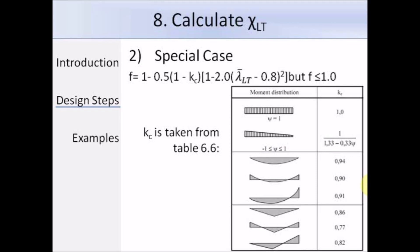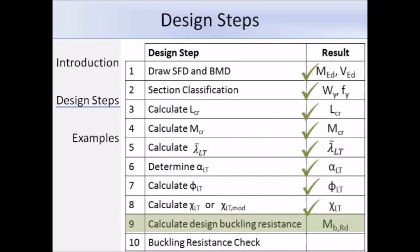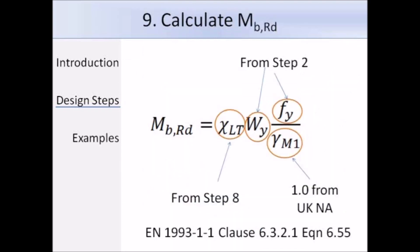Now that we've calculated chi LT or chi LT,mod, we can calculate the design buckling resistance moment. Expression 6.55 gives M_b,RD as chi LT or chi LT,mod times W_Y times F_Y divided by the partial factor gamma M1, which equals 1. We have all the values from the previous steps, so it is just a matter of substituting them in to get the design buckling resistance.